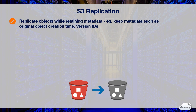S3 Replication enables automatic copying of objects across S3 buckets in the same or different AWS region. This is usually for data backup, redundancy, or auditing purposes. You can use S3 Replication to make copies of your objects and retain all metadata, such as the original object creation time and version IDs. This capability is important if you need to ensure that your replica is identical to the source object.